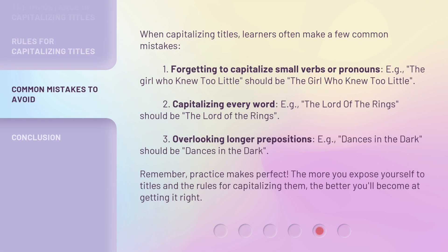When capitalizing titles, learners often make a few common mistakes. Mistake 1: Forgetting to capitalize small verbs or pronouns — e.g., "The Girl Who Knew Too Little" (not lowercase "who"). Mistake 2: Capitalizing every word — e.g., "The Lord of the Rings" (not "The Lord Of The Rings"). Mistake 3: Overlooking longer prepositions — e.g., "Dances in the Dark" should be "Dances in the Dark."